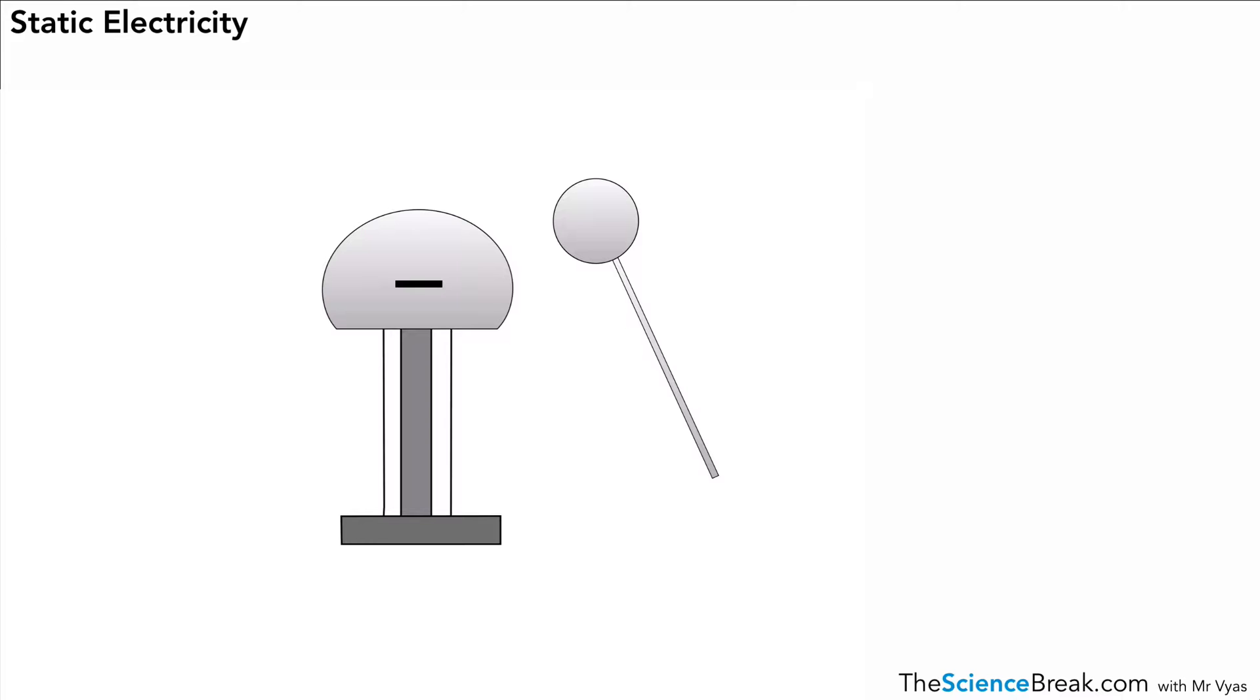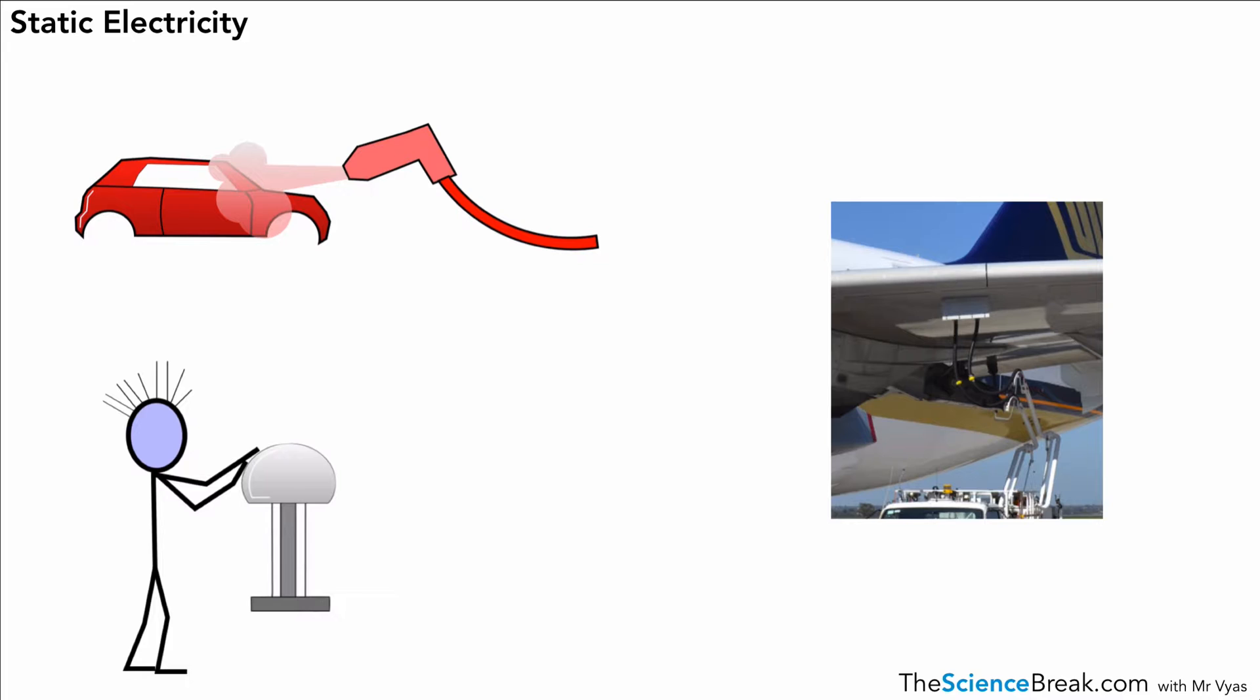What we can look at next is just a few examples where you might see static electricity in action. We have some examples here, and these are where you might see static electricity either being used, or actually in fact in one of them it's a bit of a danger. But it's examples of uses and situations where we see static electricity.